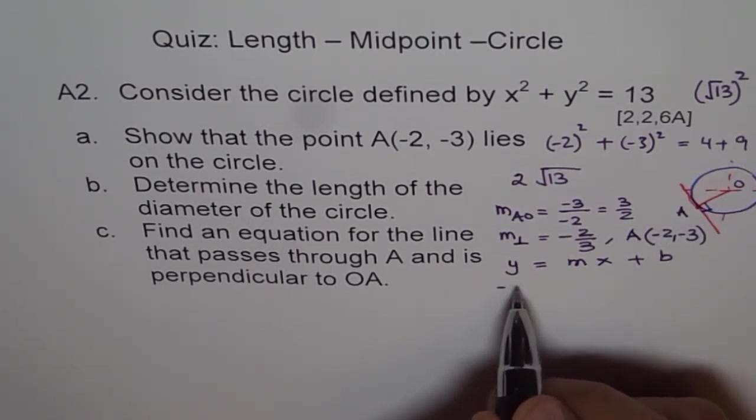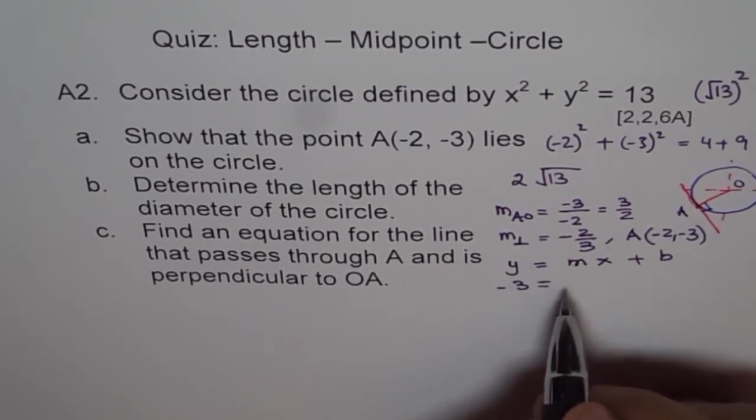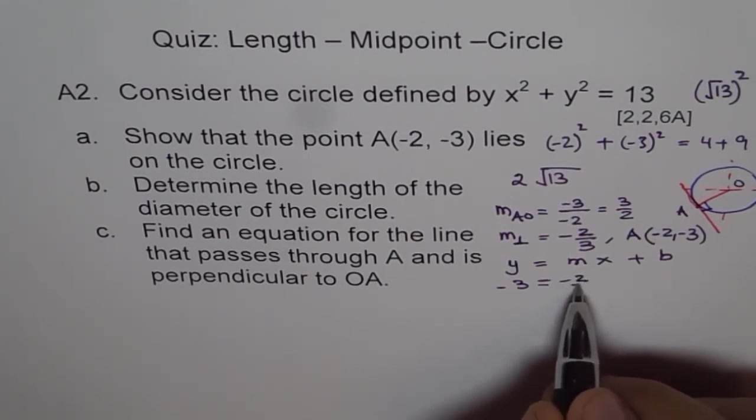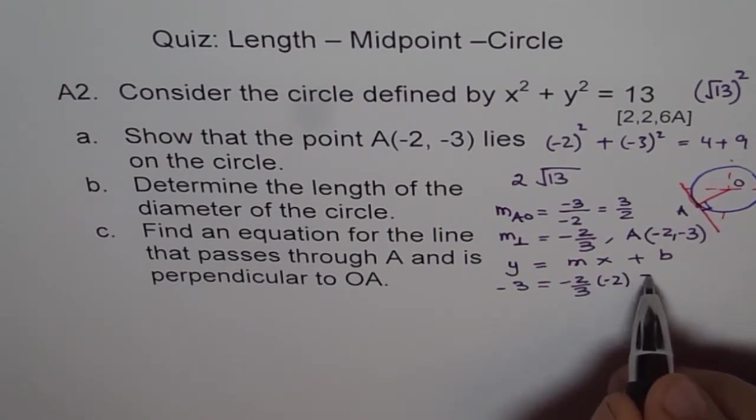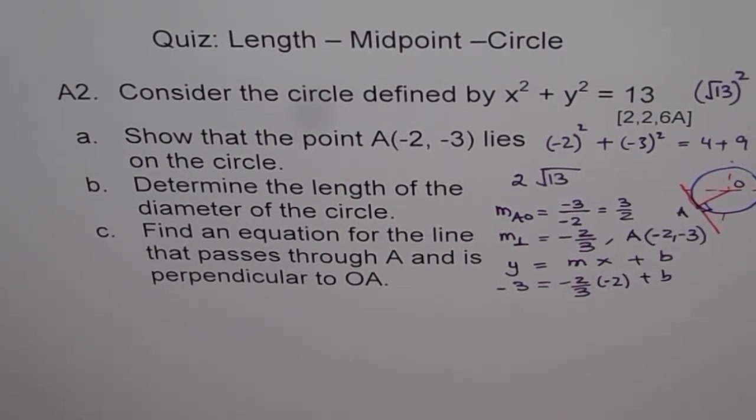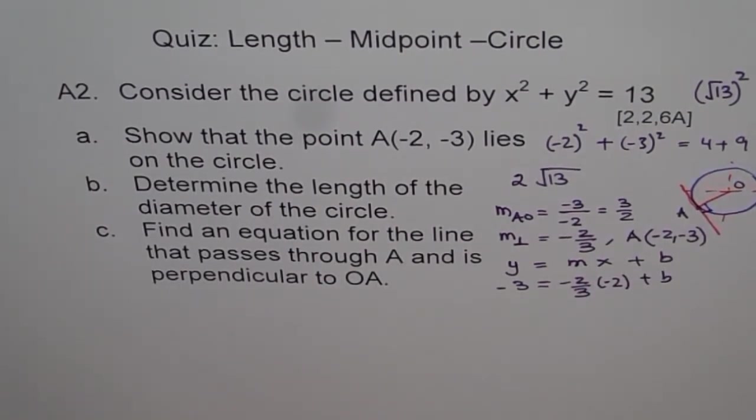Minus 3, let's say minus 3 equals to slope of minus 2 over 3. And x is minus 2 plus b. So from here, we can calculate the value of b, right?